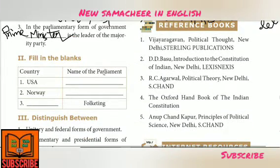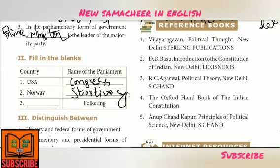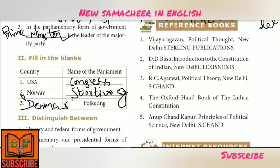Now fill in the blanks with the country and name of the Parliament. USA — Parliament name is Congress. Norway — Parliament name is Storting. Denmark — Parliament name is Denmark's parliament (Folketing).